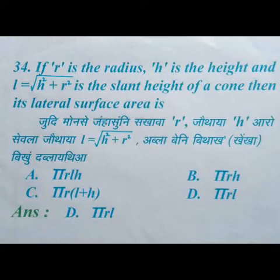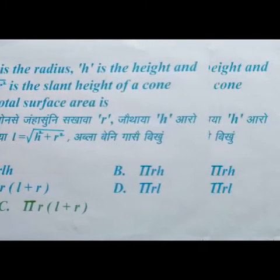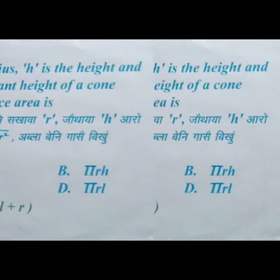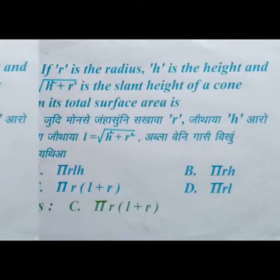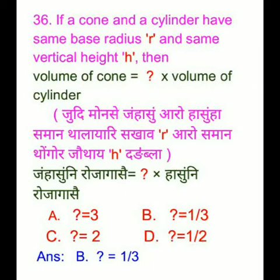is option D: pi r l. The total surface area of the cone, where L equals root over (H square plus R square) is the slant height — the answer is option C: pi r (l plus R).